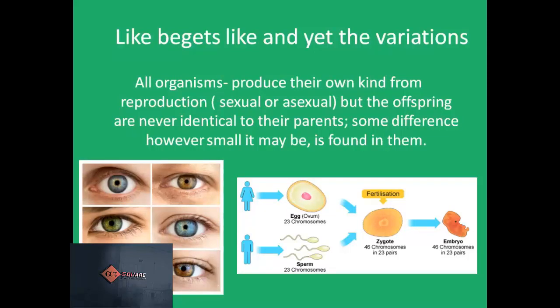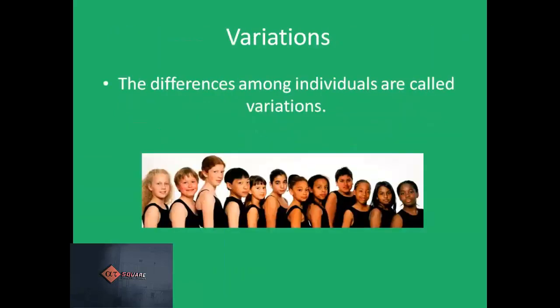Variations refers to the differences among individuals, or simply, variations are differences observed between two organisms of the same type. All organisms produce their own kind through reproduction, but the offspring are never identical to their parents — some differences, however small, are found in them. The reason for this is that the offspring is a combination of its two parents. In multicellular organisms, where the mode of reproduction is sexual, the daughter individual receives half the number of chromosomes from each parent — half from the mother and half from the father. This results in variations.